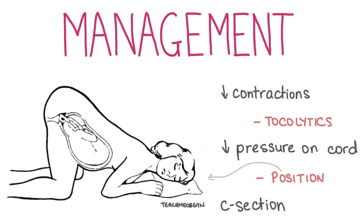The woman should either bring her knees up to her chest or go into the knee-chest face-down position to prevent cord compression even further. Immediate c-section should be arranged and carried out.